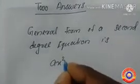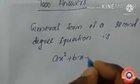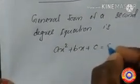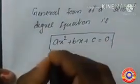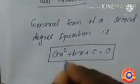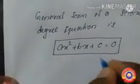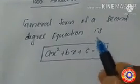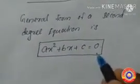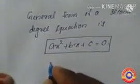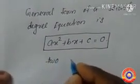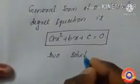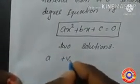We know that the general form of a second degree equation is ax² + bx + c = 0. Here the highest power of the variable is two, so this equation has two solutions.